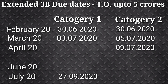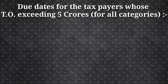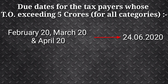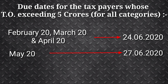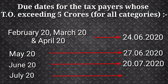For taxpayers whose turnover exceeds 5 crores, for all categories, the due date for February, March and April is 24th June 2020. For May it is 27th June, for June it is 20th July, and for July it is 20th August 2020.